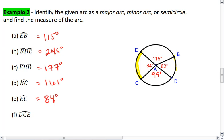And then DCE is going from D to E passing through C, which gives me 99 plus 84. It's going to be 183 degrees.